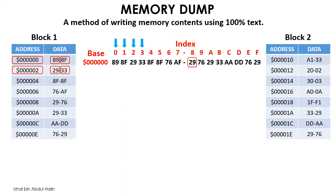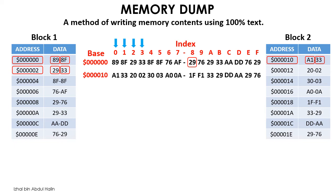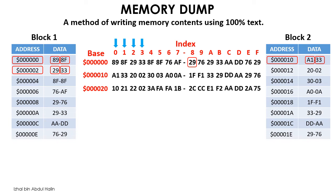You can write 16 bytes of data in one line of a memory dump. We can fill in Block 2's content easily — the base address is 10, written underneath base address 0. At address 10 the data is A1, written under index 0; address 11 contains 33, and the rest follows. If we had more data, we could add another base address below; the next would simply be 20. You could keep going until the last byte — to write the final 16 bytes, the last base address would be FFFF0.